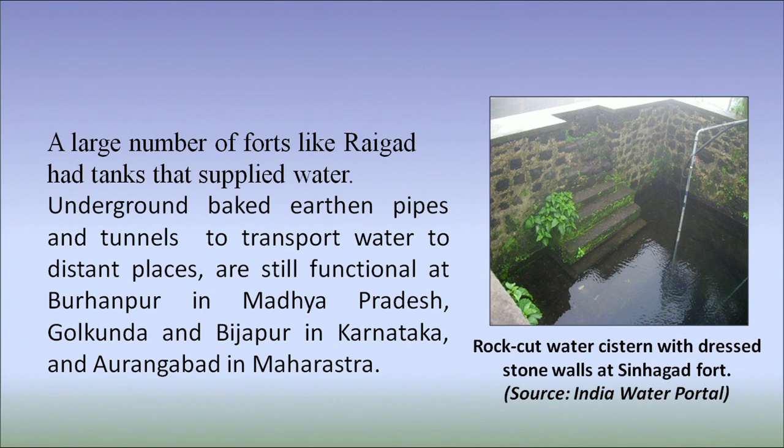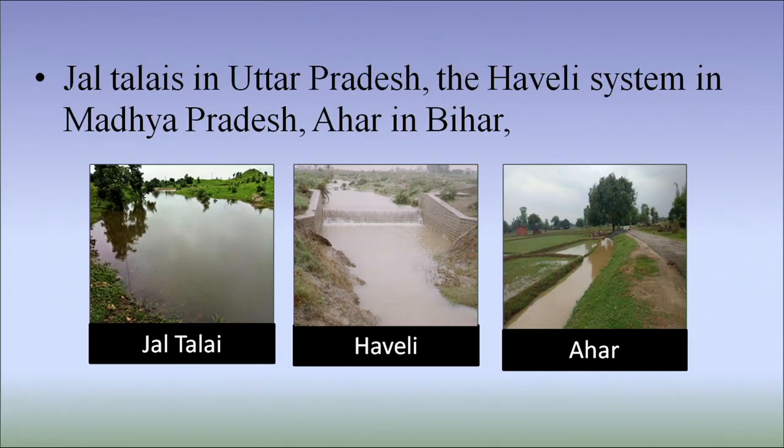In this figure, you can see that in Singarh fort, cut-out water cisterns with dressed stone walls are used to store water. Jai Taliyas in Uttar Pradesh, the Haveli system in Madhya Pradesh, and Ahar in Bihar are also methods of storing rainwater.